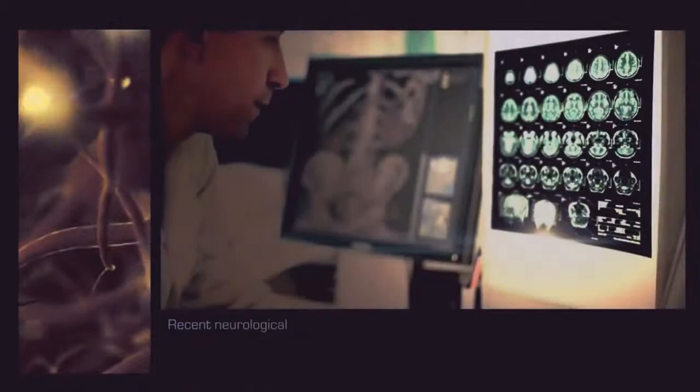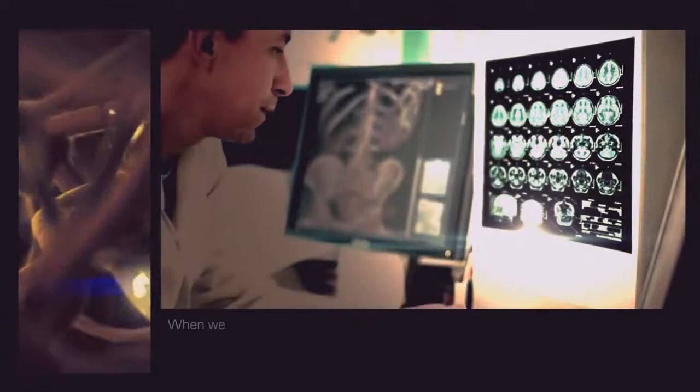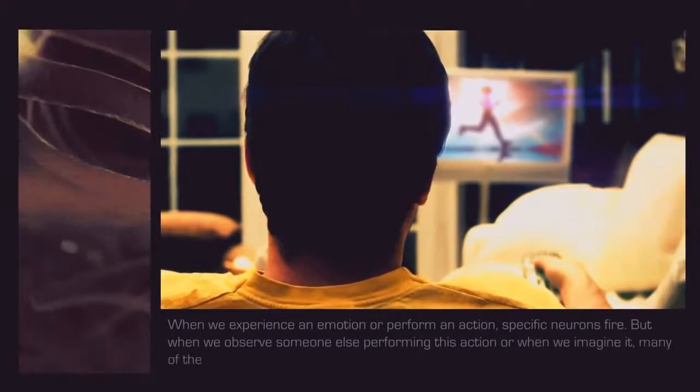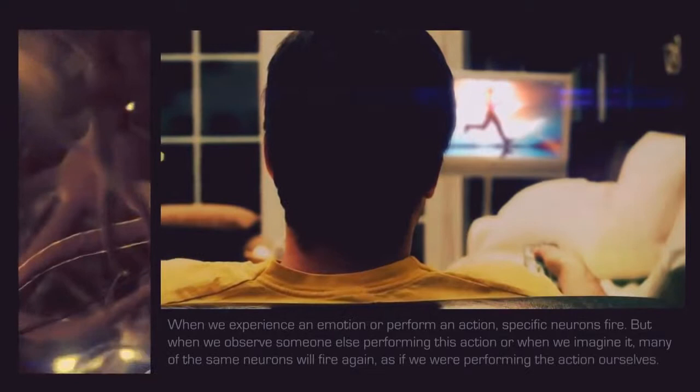Recent neurological research has confirmed the existence of empathetic mirror neurons. When we experience an emotion or perform an action, specific neurons fire. But when we observe someone else performing this action or when we imagine it, many of the same neurons will fire again, as if we were performing the action ourselves.